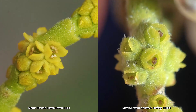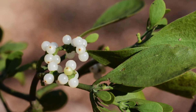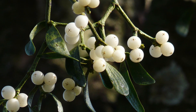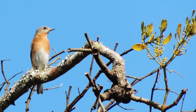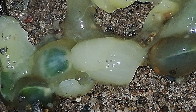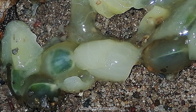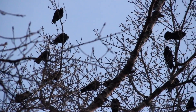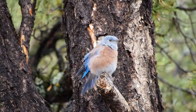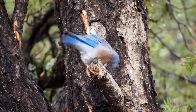Mistletoe are dioecious plants, meaning there are male and female plants, with only the female plants producing berries. The berries are white on both American and European mistletoe and are eaten by a wide range of songbirds, including the beloved bluebird. The berries contain a thick, sticky white substance which can cause seeds to stick to a bird's bill and feet, and then be transported and deposited on other tree branches as the bird wipes its bill and feet, forcing the seeds into nooks and crannies on the bark.